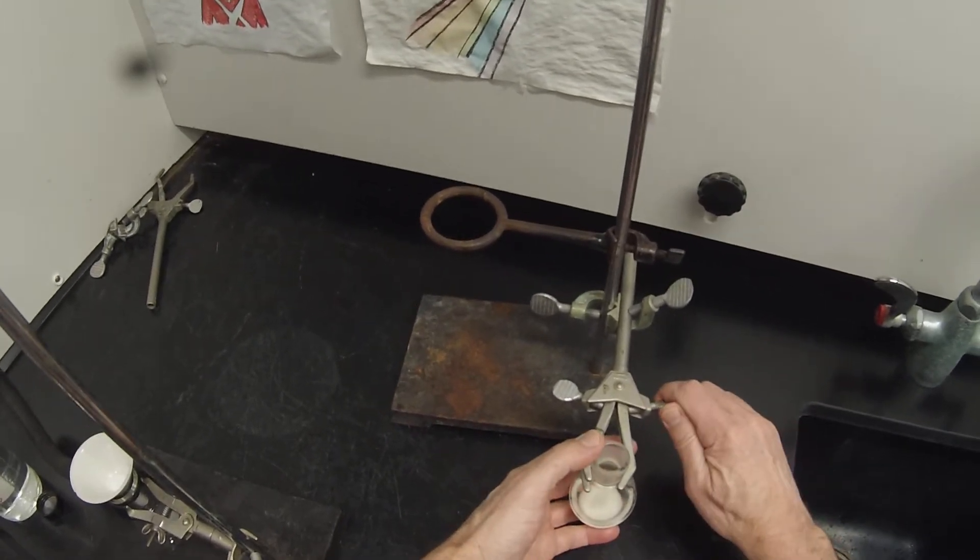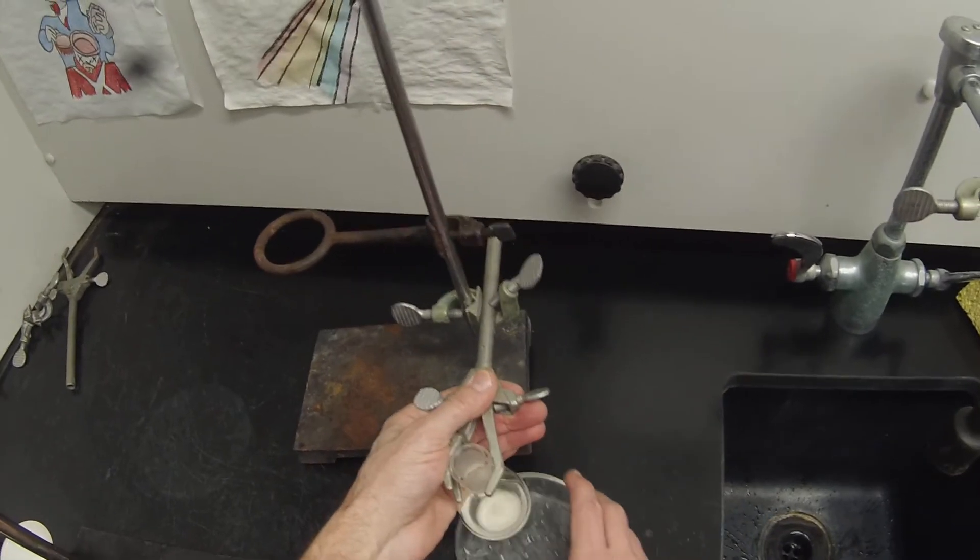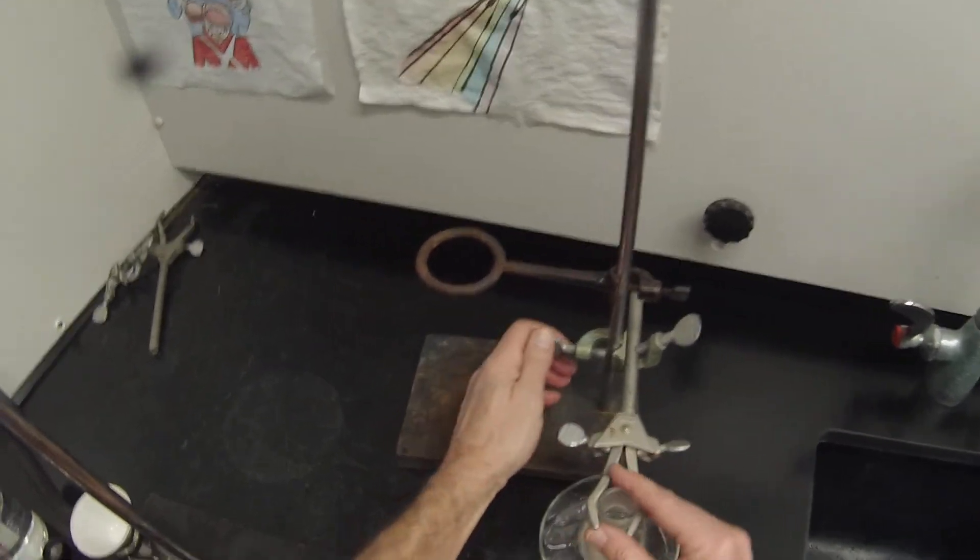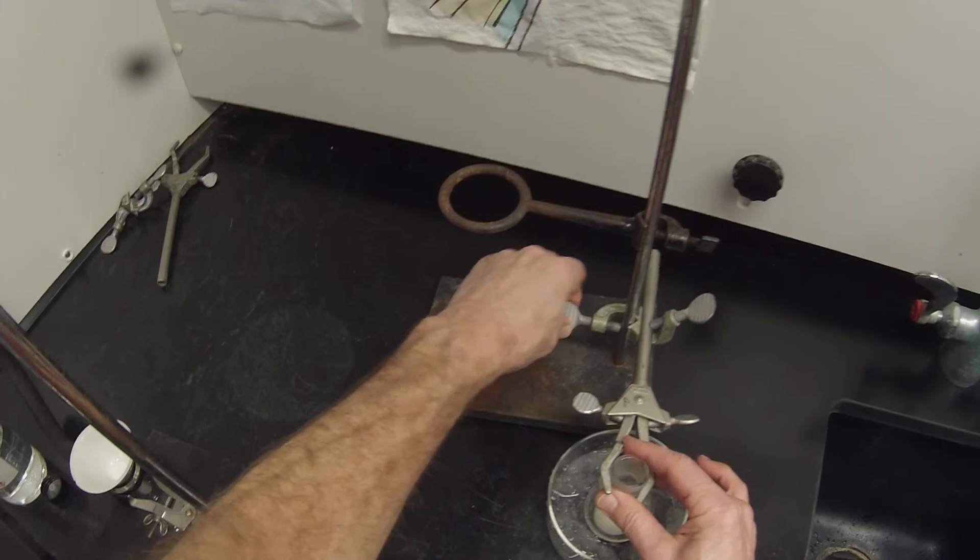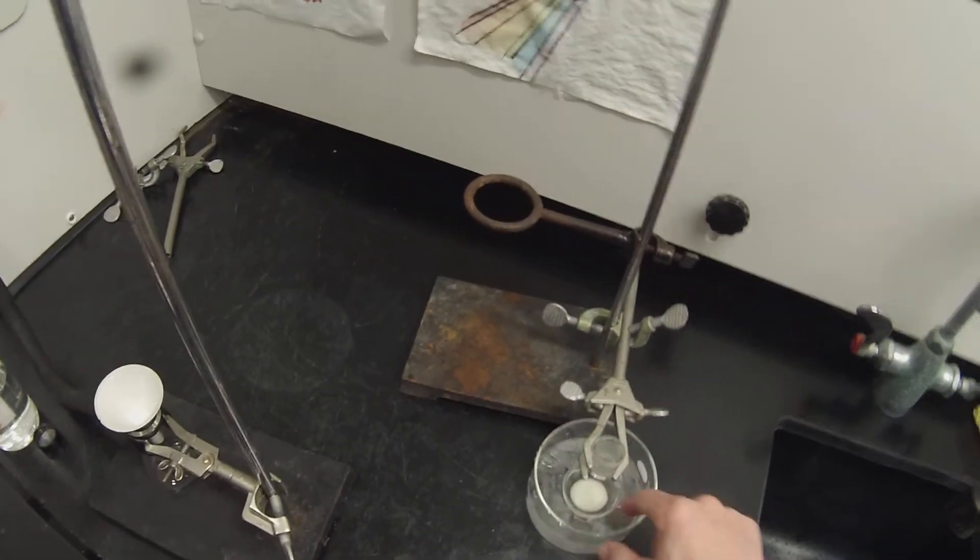Three-jawed clamps aren't ideal for this flask, but I just want to get it stable enough that it's not going to fall out of there. So we'll let that cool a little bit.